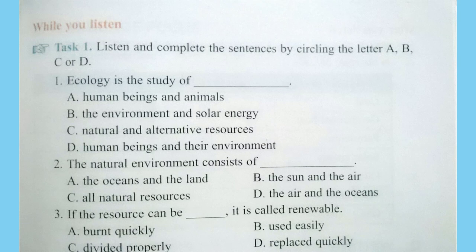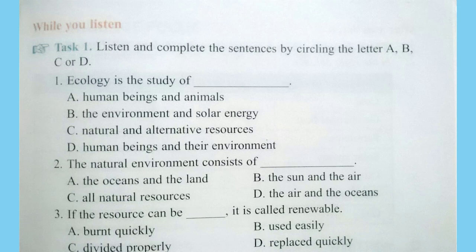When a resource is used, it takes some time to replace it. If the resource can be replaced quickly, it is called renewable. If it cannot be replaced quickly and easily, it is non-renewable. For example, grass for animals is a renewable resource. When cows eat the grass, the resource is used. If the soil is fertilized and protected, more grass will grow. Coal, however, is non-renewable because it takes millions of years to make coal.